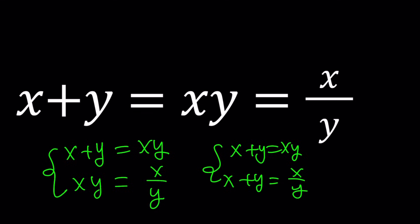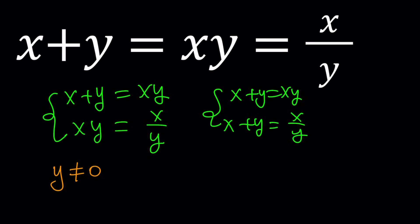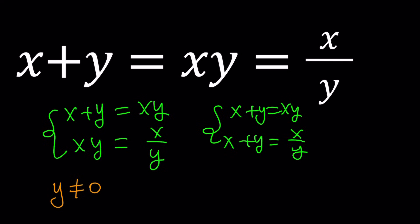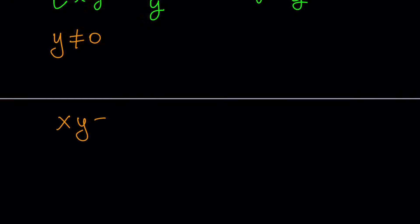Anyways so let's start with some restrictions. First of all y cannot equal zero. Why cannot equal zero? Because it's in the denominator. Great. Looks like that's my only limitation for now. Let's see how this goes. I have x plus y equals xy and xy equals x over y. What should I start with? I feel like starting with these two things. Let's go ahead and start with that equation. Find some conditions and then plug it into maybe these two and then see where that goes.